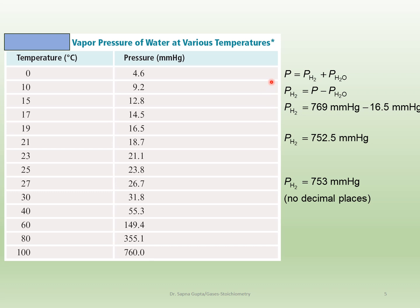Hypothetically, if you were collecting hydrogen over water, the total pressure would include hydrogen as well as water vapor at that temperature. For example, if you were doing this at 19 degrees Celsius, the pressure of hydrogen would be the total pressure minus the vapor pressure of water at 19 degrees Celsius, which is 16.5 mmHg. This gives you the partial pressure of hydrogen, which is slightly less than the total pressure. It does make a difference in your calculations — it's not huge, but it is meaningful, so remember to do this subtraction when your problem reads 'collecting gas over water.'